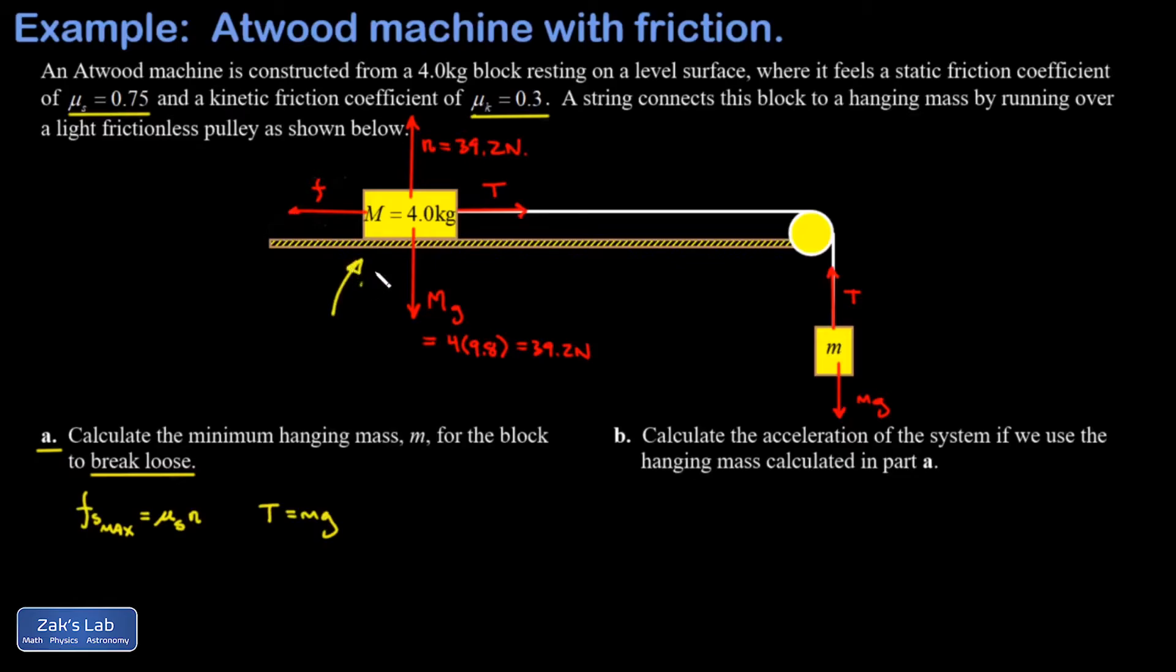If I look at the analysis of my big M, again it's a static situation. T is pulling to the right and this force of static friction is pulling to the left. If we're right at the point where things are about to break loose, that static friction force is maxed out.